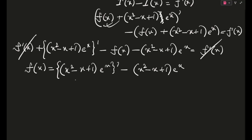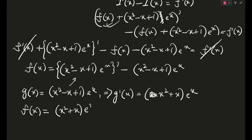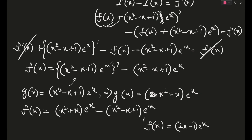Now let's differentiate g(x) = (x² − x + 1)·eˣ. Computing g'(x): differentiating by the product rule gives g'(x) = (x² + x)·eˣ. So f(x) = (x² + x)·eˣ − (x² − x + 1)·eˣ. After cancellations, f(x) = (2x − 1)·eˣ. This is our final f(x).